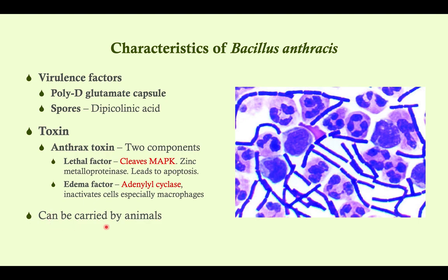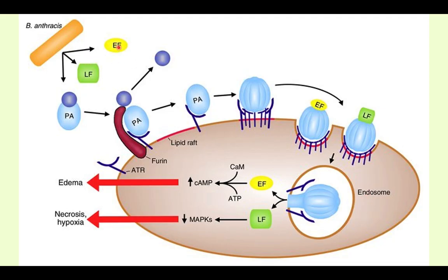Bacillus anthracis can be carried by animals — the classic exposure is by exposure to sheep hides. This is a CSF sample that's been gram-stained of a patient who had Bacillus anthracis meningitis, and you can see here the rods forming chains along with quite a few neutrophils. This is how lethal and edema factors work: they're initially attached to something called protective antigen. Protective antigen does not cause disease — it just escorts edema factor and lethal factor into the cell. Edema factor increases cyclic AMP and causes edema; lethal factor cleaves MAP kinases and causes necrosis.